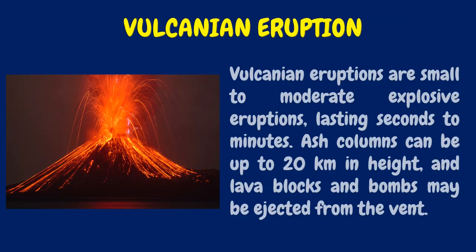Vulcanian eruptions are small to moderate explosive eruptions lasting seconds to minutes. Ash columns can be up to 20 km in height, and lava blocks and bombs may be ejected from the vent.